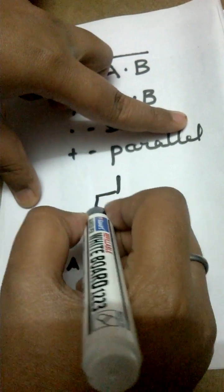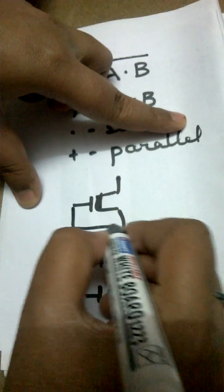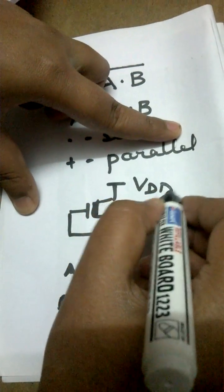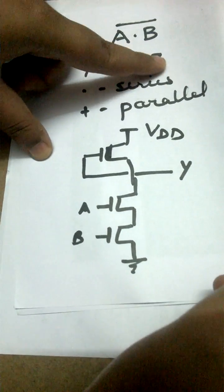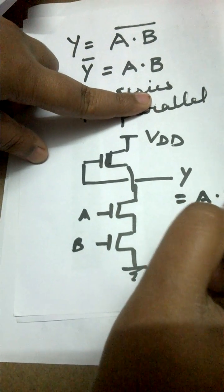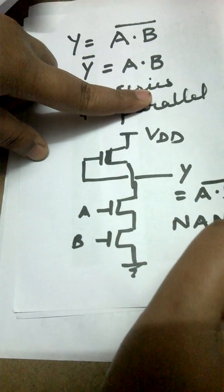The upper part remains the same, so we can draw the same structure here also. And here we can take the output Y, and here VDD and ground is provided. So this Y is going to generate your A dot B bar, which is basically your NAND gate. Any gate, any digital logic function can be realized using this technique.